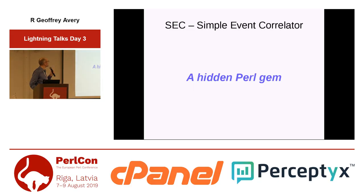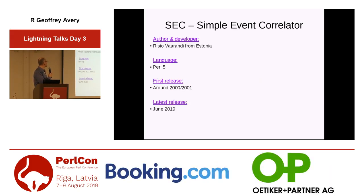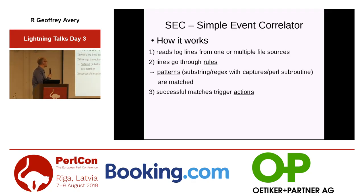The answer — the missing piece — is SEC, the Simple Event Correlator, a Perl 5 software. It's been around since the early 2000s, written in Perl 5 by a single developer from Estonia. It works as a daemon which reads log lines from one or multiple file sources, then those lines go through rules that attempt to match patterns — usually substrings, regexes with captures, or even Perl subroutines — and if matched, trigger actions.